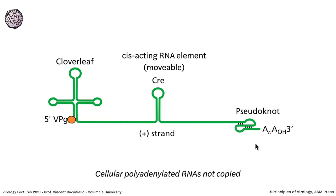At the very 5' end of the RNA, there's a protein called VPg — a 22-amino acid viral protein linked by a phosphodiester bond to the first base in the RNA, which happens to be a U. That protein is a primer for RNA synthesis. The entire genome has a cloverleaf structure at the 5' end comprising three stem-loop structures, a cis-acting RNA element called the CRE somewhere interior, and a pseudoknot at the 3' end. These structures ensure that the RNA polymerase only copies viral RNA and not cellular RNAs.